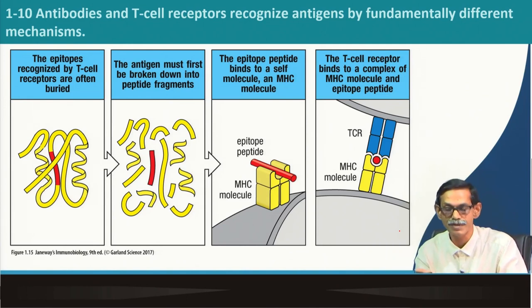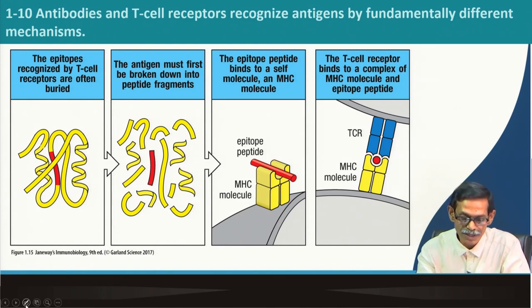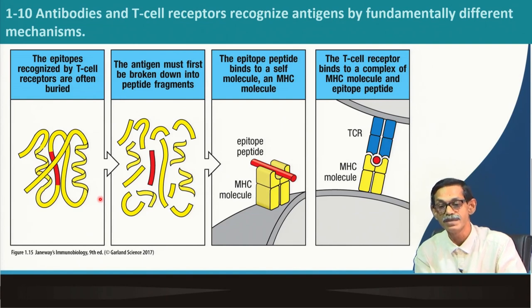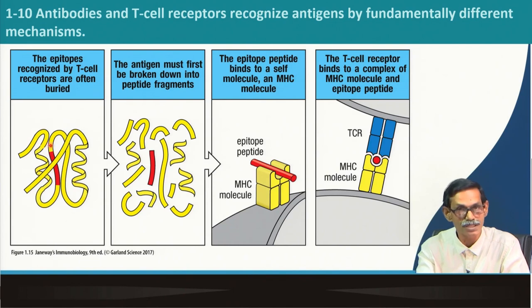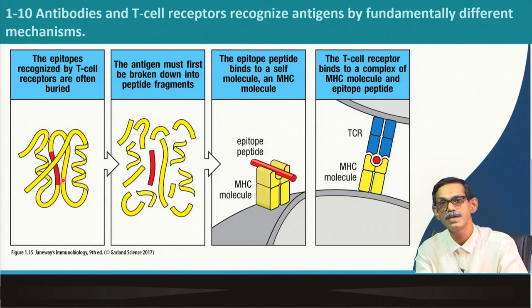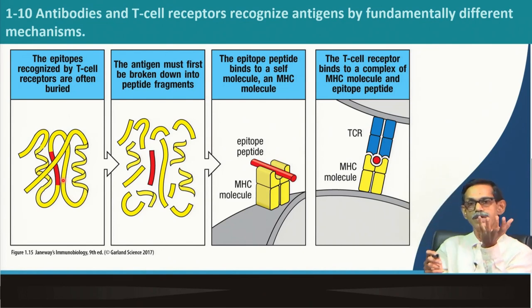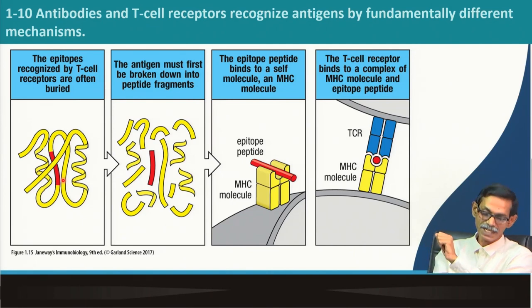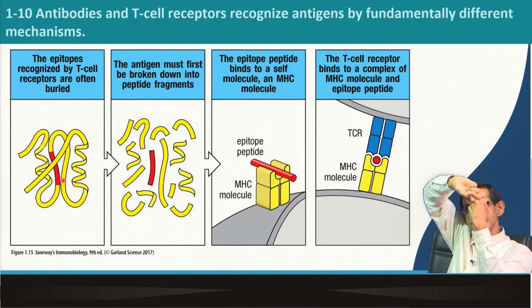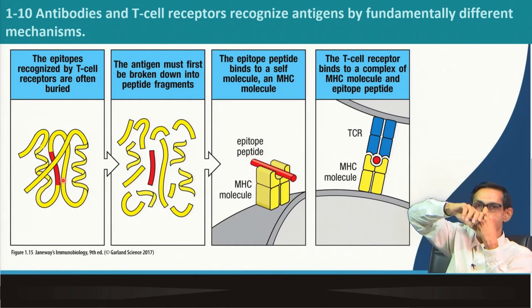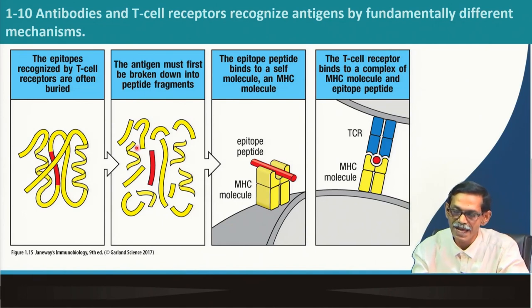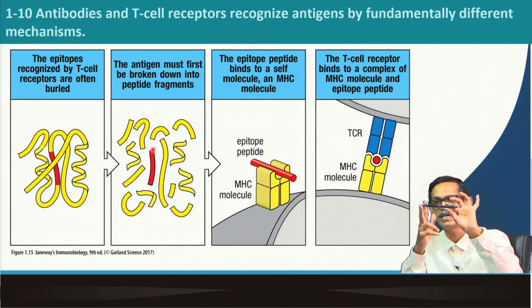In the case of B cell receptors, mostly the outer part of the protein is interacting with the antibody. In the case of T cells, the epitope recognized by the T cell receptor may be buried or inside the protein molecule — not visible in the three-dimensional structure. This is because the T cell will not recognize the whole antigen; it needs to be processed. The antigen should be chopped into pieces — different fragments.